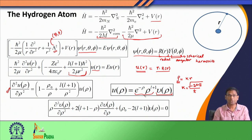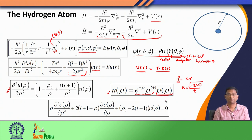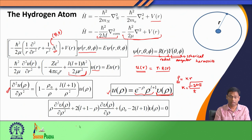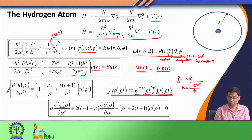Instead of solving the differential equation for u(rho) directly, we looked at its asymptotic solutions: one when r, the distance between the electron and nucleus, is very large, and the other when the distance becomes very small. From these two asymptotic solutions we obtained the functions e^(−ρ) and ρ^(l+1), and then introduced the main body of the solution as v(ρ), another function, combining both asymptotic solutions.